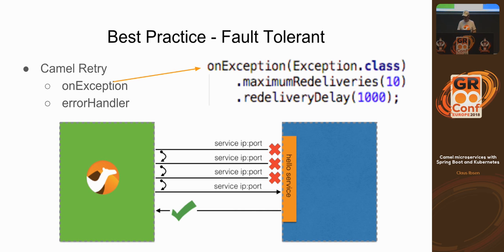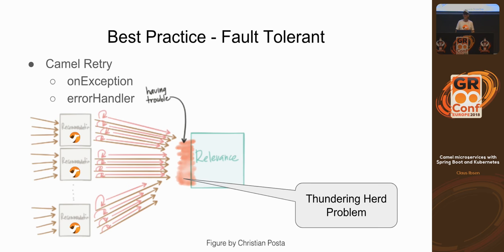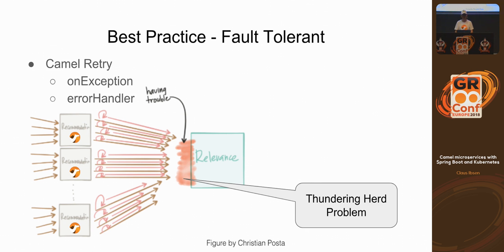However, client-side retries aren't always a good approach. If a downstream service is under stress and many upstream services all have retries, they just keep calling the same struggling service over and over, adding more load. This is known as the thundering herd problem — like a herd of cows running toward you with nothing to stop them. There's a different approach to address this, which I'll talk about in a moment.